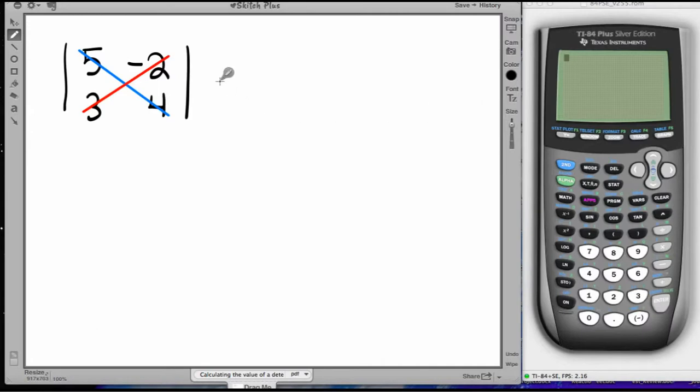So to actually perform the calculation, what you do is you take the product of the two numbers on the forward diagonal. That would in this case be 5 times 4, and you subtract from that the product of the two numbers on the reverse diagonal. So the numbers here are pretty easy: 5 times 4 is 20, minus the product of 3 and negative 2, negative 6. So the determinant of this grid of four numbers is 26.